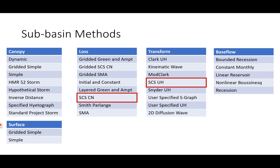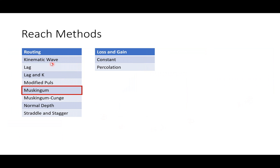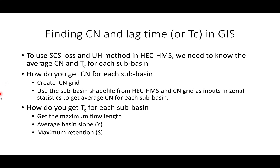These are all the methods available in HEC-HMS, but we will not use all of them. We will skip canopy and surface methods. For loss we will use the SCS Curve Number method to get excess rainfall, and then transform excess rainfall to a direct runoff hydrograph using the SCS Unit Hydrograph transform method. We will not include base flow. For reach routing we will use the Muskingum method, ignoring loss and gain methods.